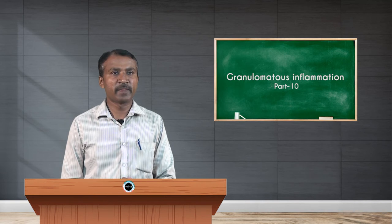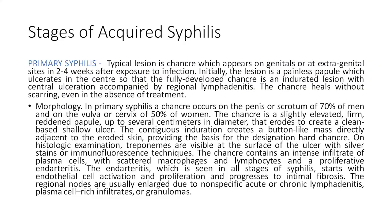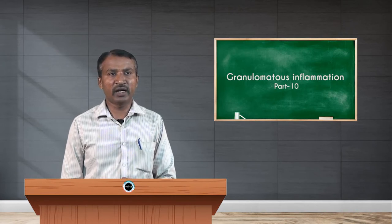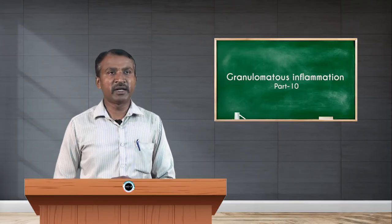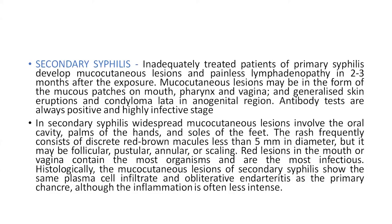On histological examination, treponemas are visible at the surface of the ulcer with silver stains. The chancre contains an intense infiltrate of plasma cells with scattered macrophages and lymphocytes. A proliferative endarteritis, seen in all stages of syphilis, starts with endothelial cell activation and proliferation and progresses to intimal fibrosis. The regional nodes are usually enlarged due to non-specific acute or chronic lymphadenitis. Plasma cell-rich infiltrates or granulomas are present.